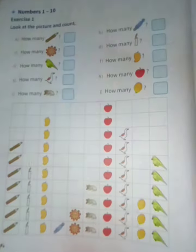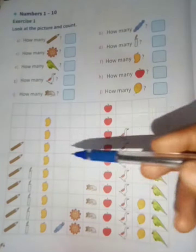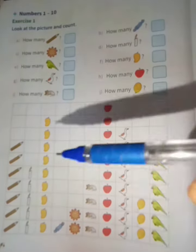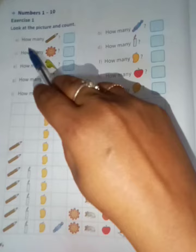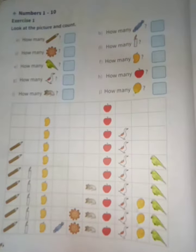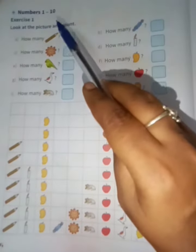In this exercise number 1, you all have to look at the picture and count. So here they have given one picture. You all have to look at this picture and write how many are there of each object. Let me give one example.